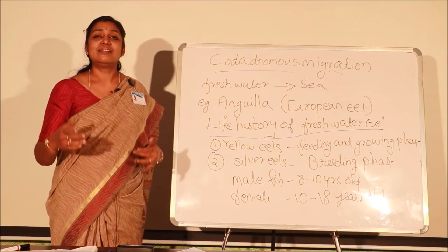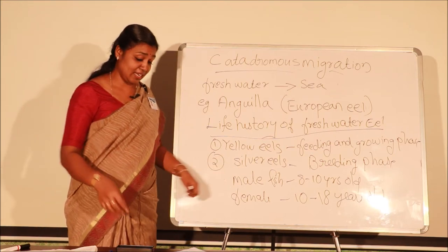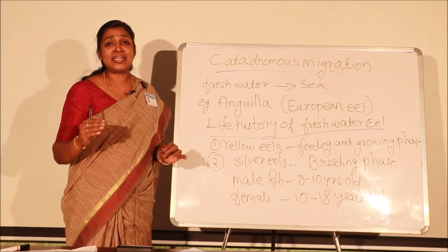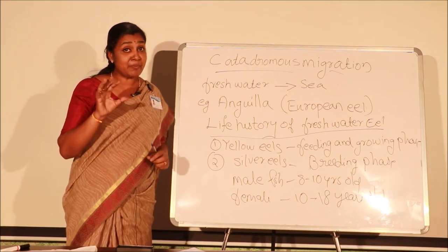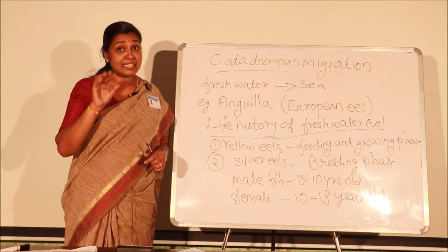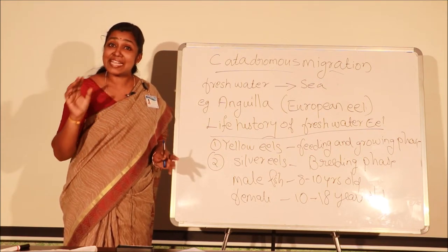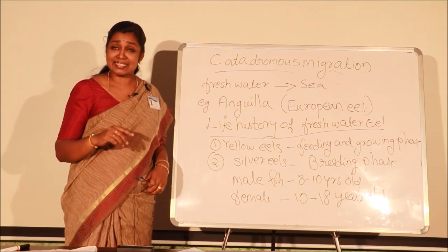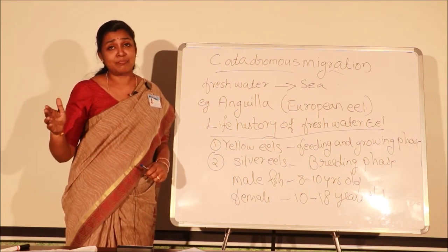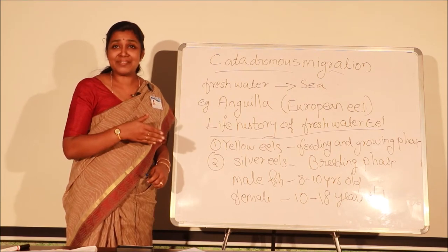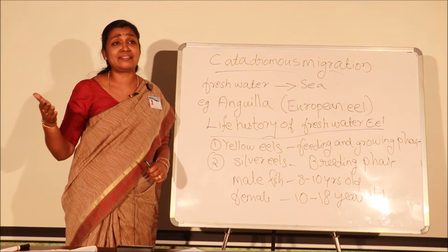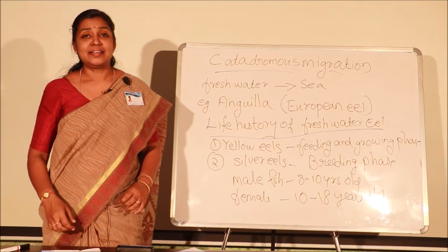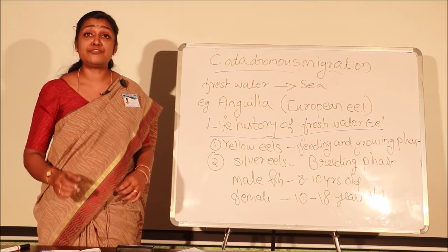When the eel is ready to migrate, it stops feeding — it takes no food. The body color changes, the eyes become large to conserve energy for swimming, and the lips become thin. It is ready to migrate from freshwater to sea. The European eel, Anguilla, travels thousands of kilometers, needing stored energy since it no longer feeds.